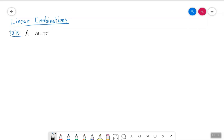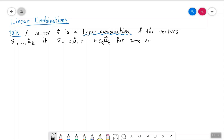A vector v is a linear combination of the vectors u1 through uk if it can be written as v equals c1 u1 plus dot dot dot plus ck uk for some scalars c1 through ck.